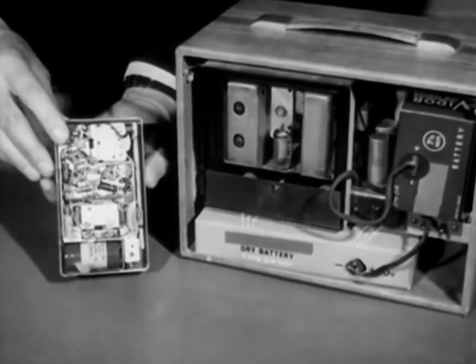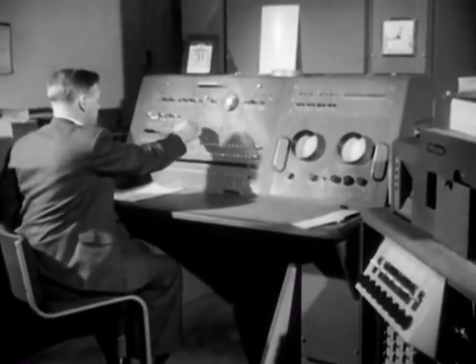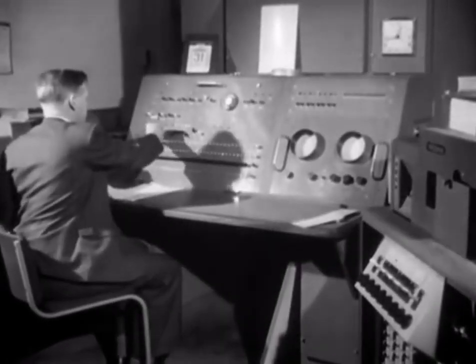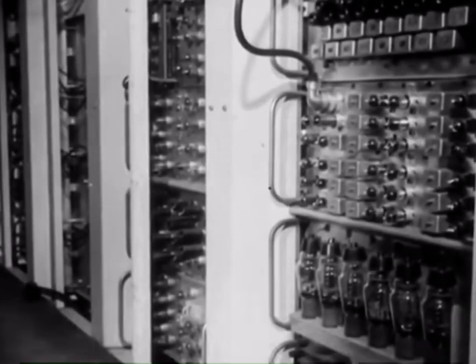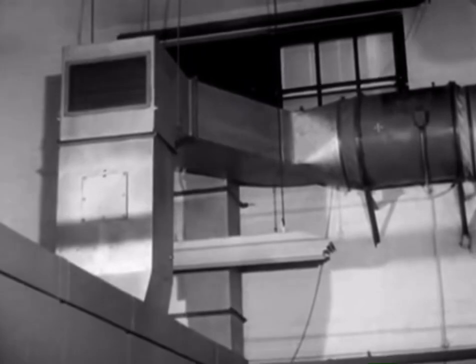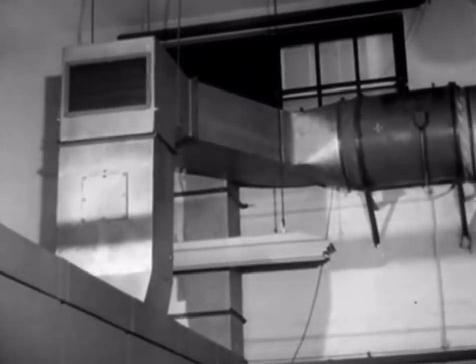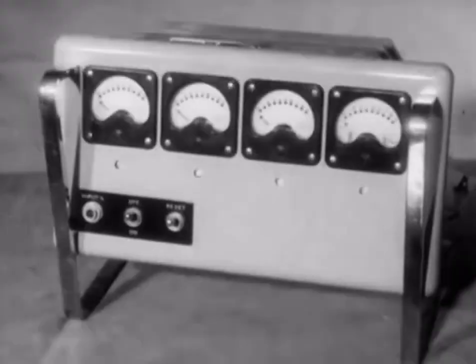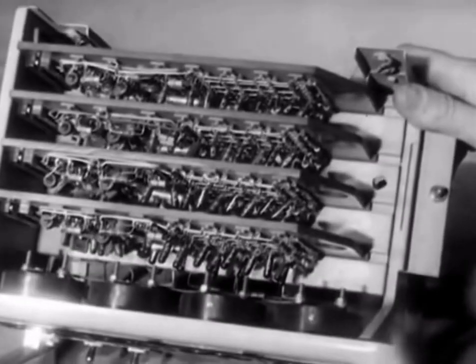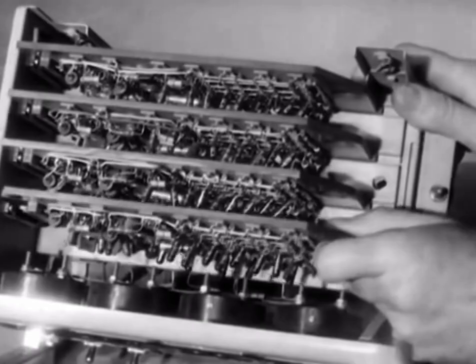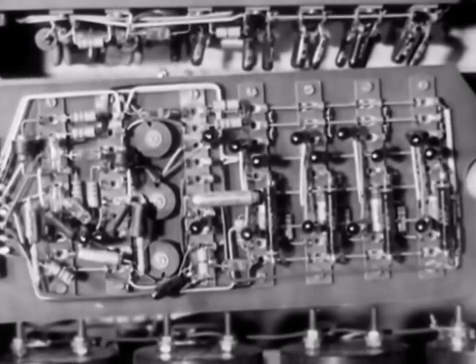Another advantage is illustrated in large equipment like this electronic computer. When using valves, 5,000 of them in this case, quite elaborate ventilation systems are required to remove the heat generated by the valves. In transistor operated equipment, there is practically no heat generated and the transistors may be mounted close together on panels like this alongside the other components.